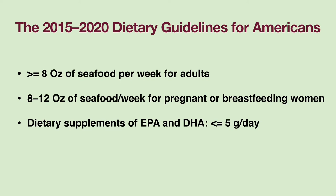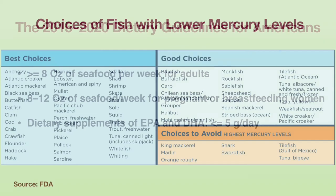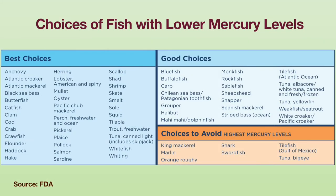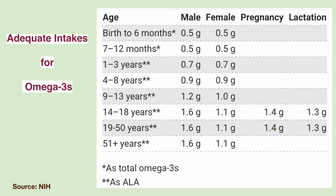Dietary supplements of EPA and DHA at no more than 5 grams a day are considered safe when used as recommended. This table provides information on the best choices of fish that contain low mercury levels and the fish to avoid. As shown in this table, the National Academy of Medicine has established the adequate intakes of omega-3 fatty acids for people of different age groups.